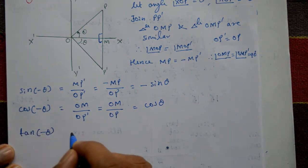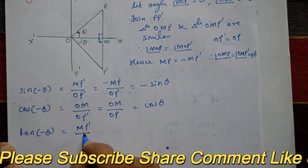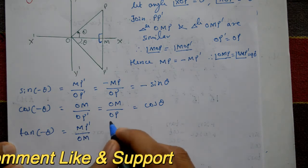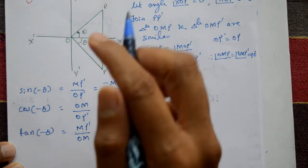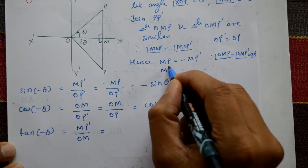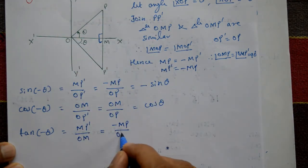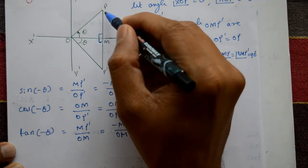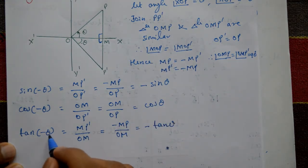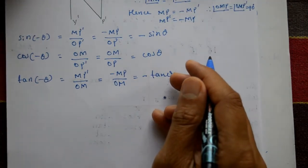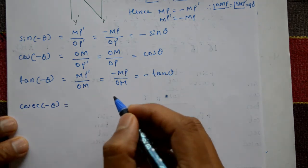Next, tan of minus theta means opposite side upon adjacent side, which is MP dash over OM. Since MP dash is equal to minus MP, this becomes minus MP divided by OM — where OM is the common adjacent side. This equals minus tan theta. Therefore, tan of minus theta is equal to minus tan theta.